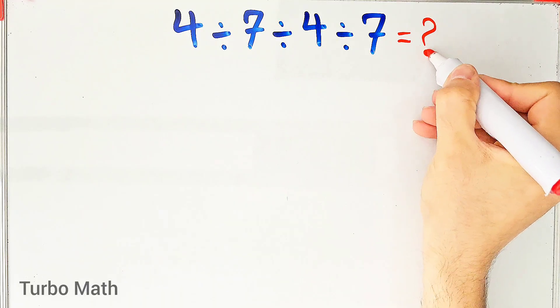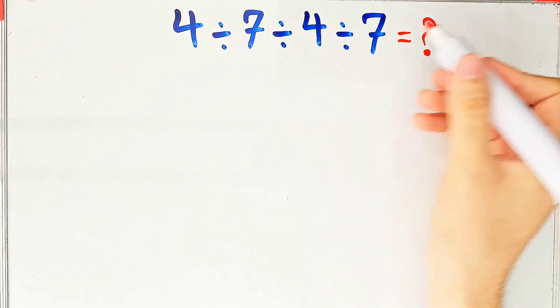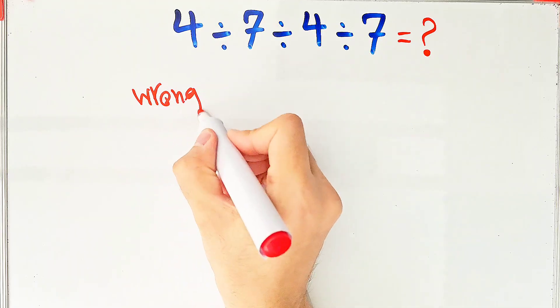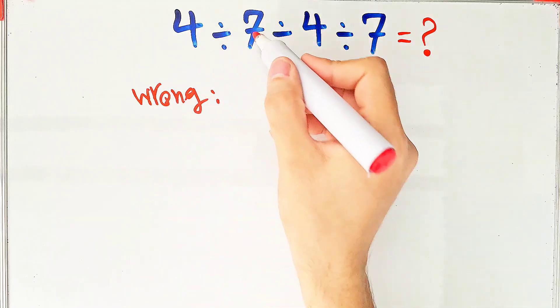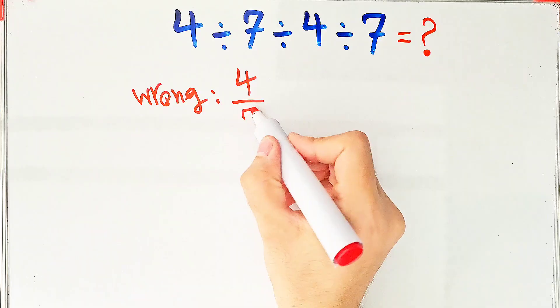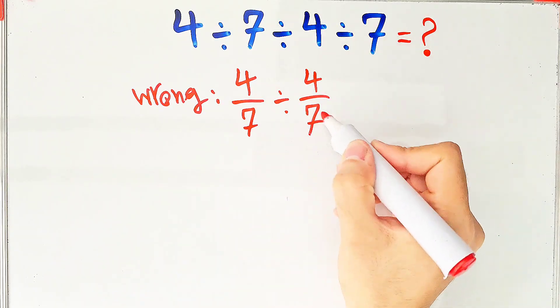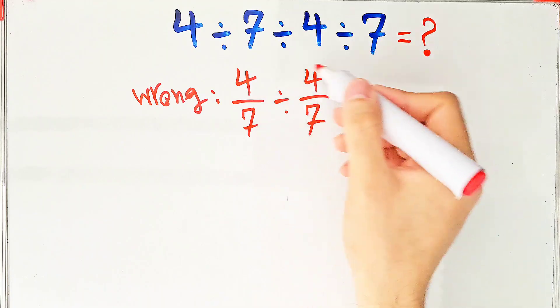In the wrong way of solving this question, some people solve this question like this: 4 divided by 7 equals 4 over 7. After that, divided by 4 divided by 7 which equals 4 over 7.